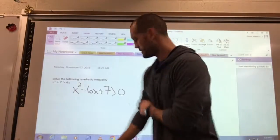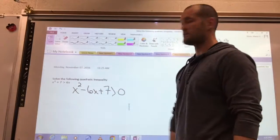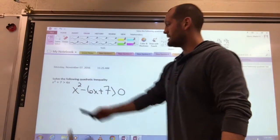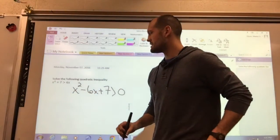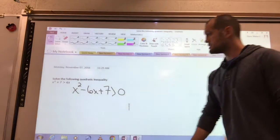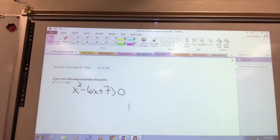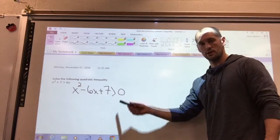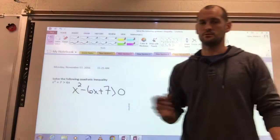Alright, two more. Here we go. Solve the following quadratic inequality. Now we're starting with x squared plus 7 is greater than 6x. First things first, let's get it equal to zero. So all I did was subtract the 6x, giving me x squared minus 6x plus 7 is greater than zero. From here, solve as you would normally.